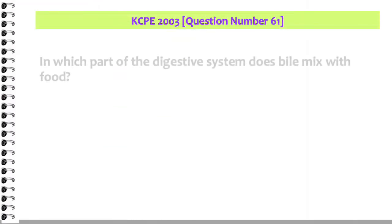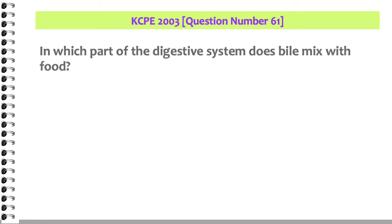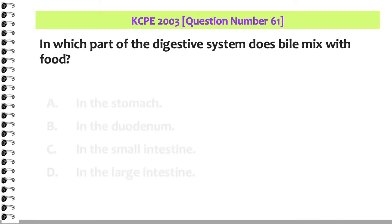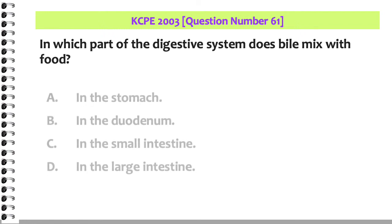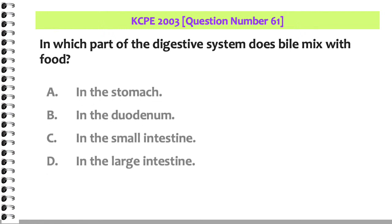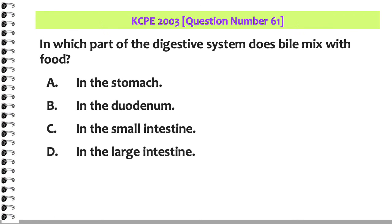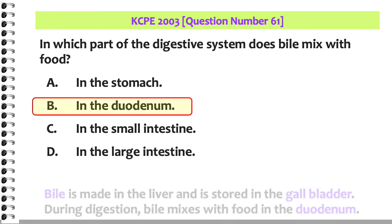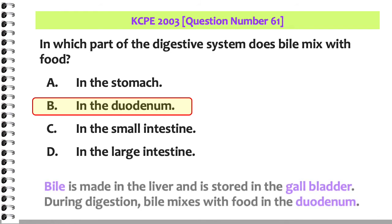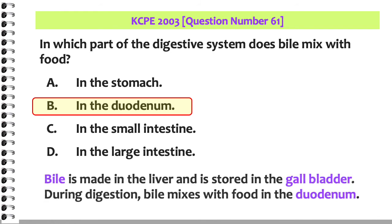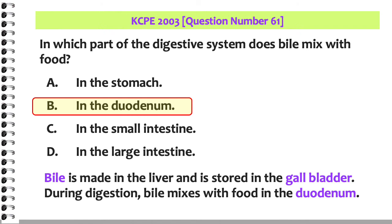In which part of the digestive system does bile mix with food? A. In the stomach. B. In the duodenum. C. In the small intestine. D. In the large intestine. The answer is B: bile is made in the liver and stored in the gallbladder. During digestion, bile mixes with food in the duodenum.